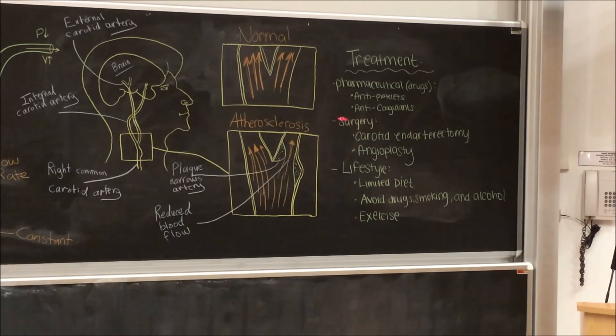Surgeries involve endarterectomies of the carotid arteries, which is used to remove unwanted fatty deposits and clear the arteries of plaques. Angioplasty is also used and involves the installment of a stent treatment to prevent plaque to keep building.